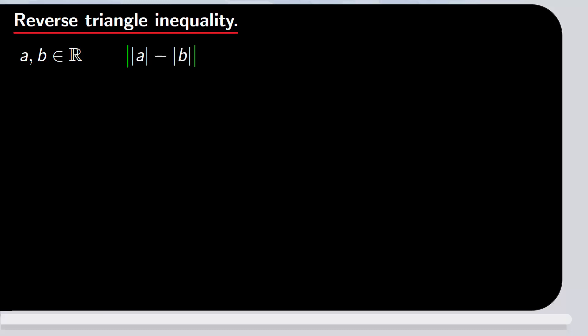In this video we'll prove the so-called reverse triangle inequality. This states that if we have two real numbers a and b, then the absolute value of the difference of the absolute values of a and b is less than or equal to the absolute value of a minus b.